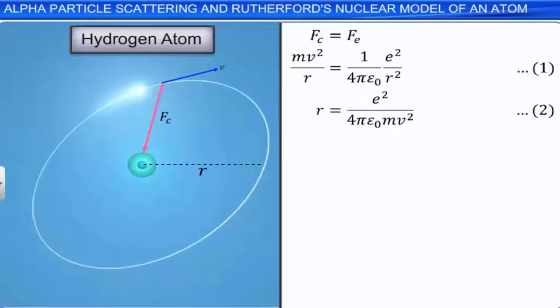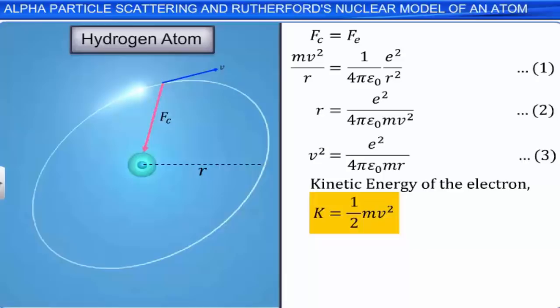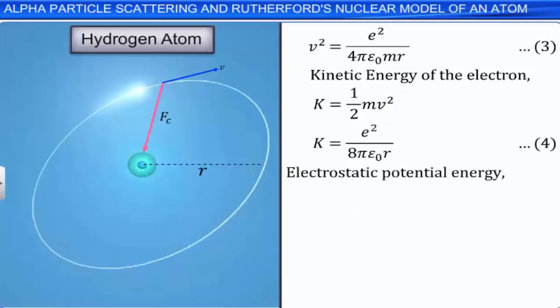The kinetic energy of the electron in the hydrogen atom is K = ½mv². Substituting v² from equation 3, we get K = e²/(8πε₀r) — equation 4. The electrostatic potential energy of the electron is U = −e²/(4πε₀r) — equation 5.